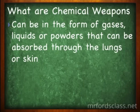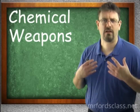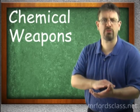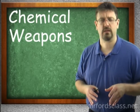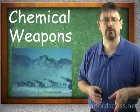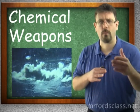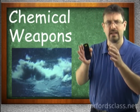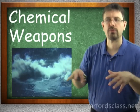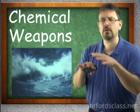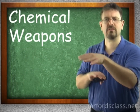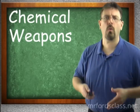They can be in the form of gas, liquids, or powders that can be absorbed either through your skin or through your lungs. So you're either breathing this stuff in or it's being absorbed through your skin. They can also be used to contaminate ground. For example, if somebody doesn't want people coming through a pass — let's say there's a weak point — they can salt the earth, they can use chemical weapons to make it where that ground is unsafe to either go through or occupy.